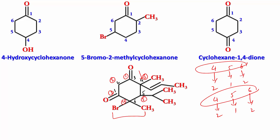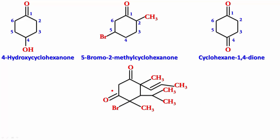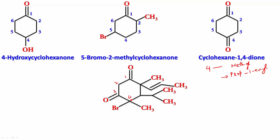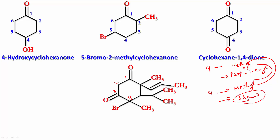Since the positional numbers don't help, let's look at the names of the substituents. At position 4 going clockwise, I have a methyl in one numbering and in the other I also have methyl — those match. But then I need to compare: one numbering gives me a prop-1-enyl group, while the other gives bromo. Since bromo takes alphabetical precedence over prop-1-enyl, the numbering that places bromo at position 4 is the one to select.